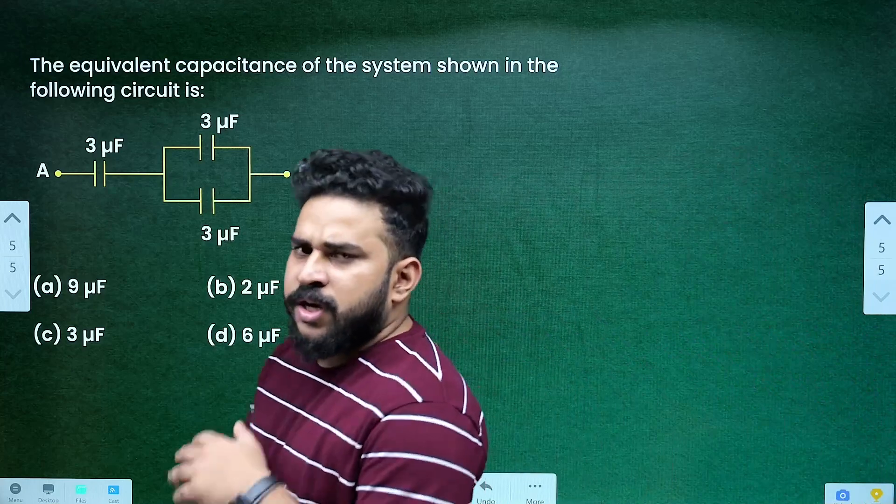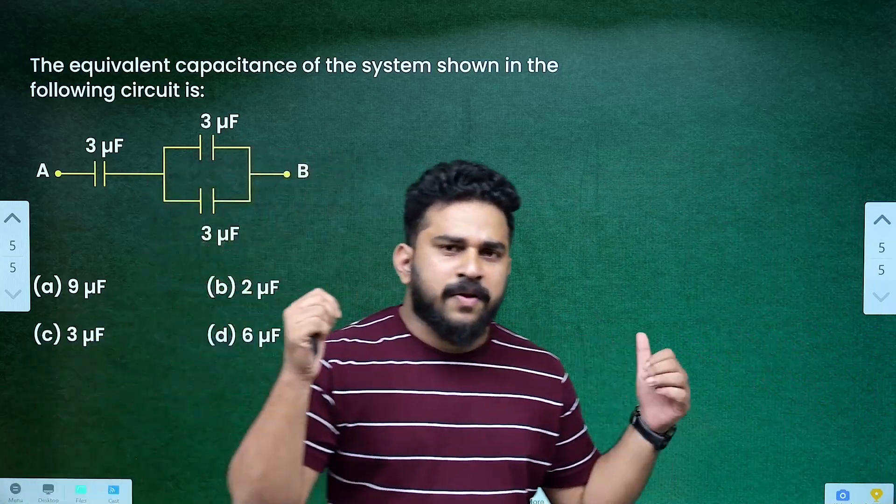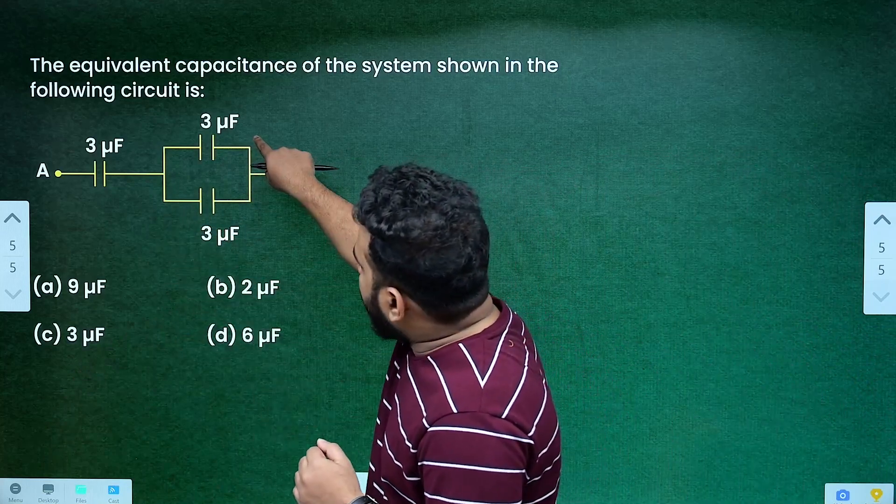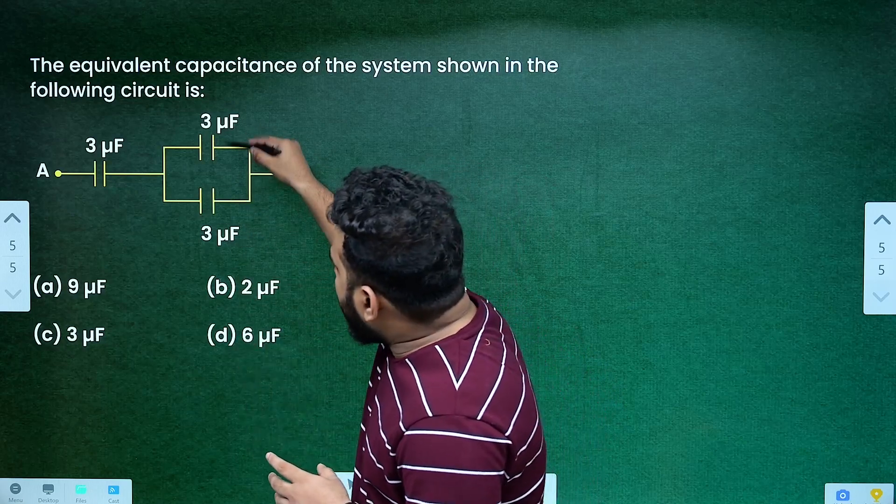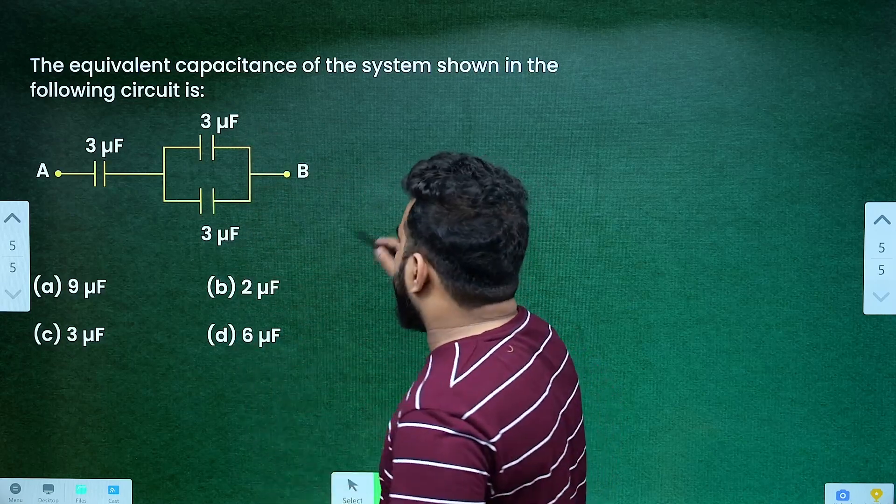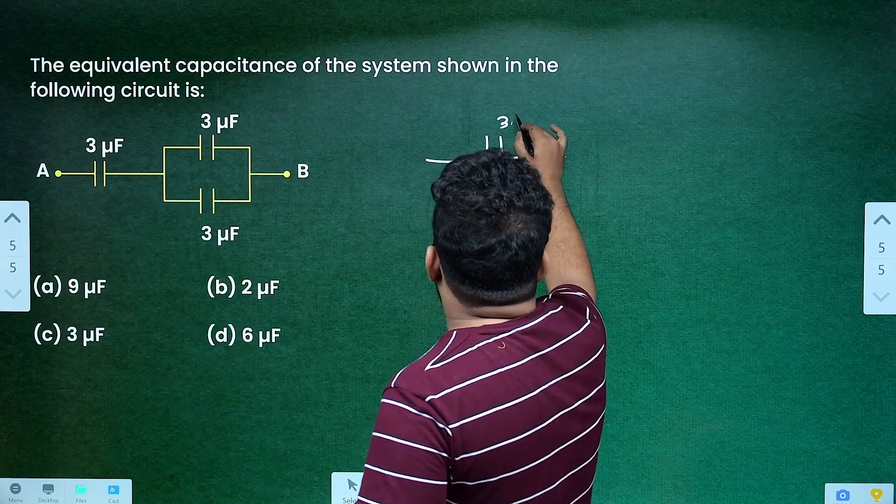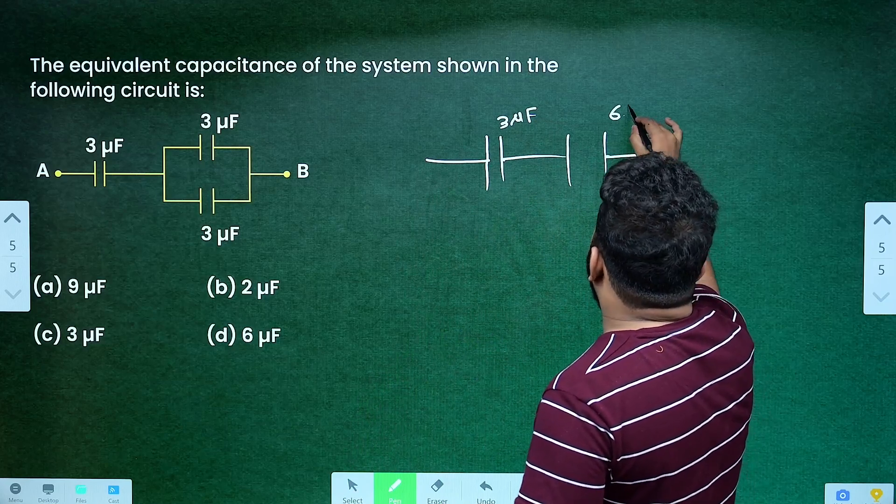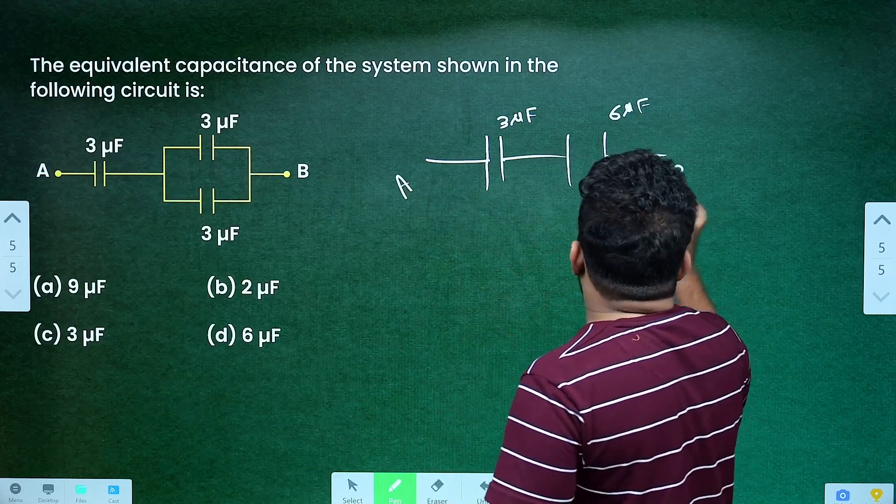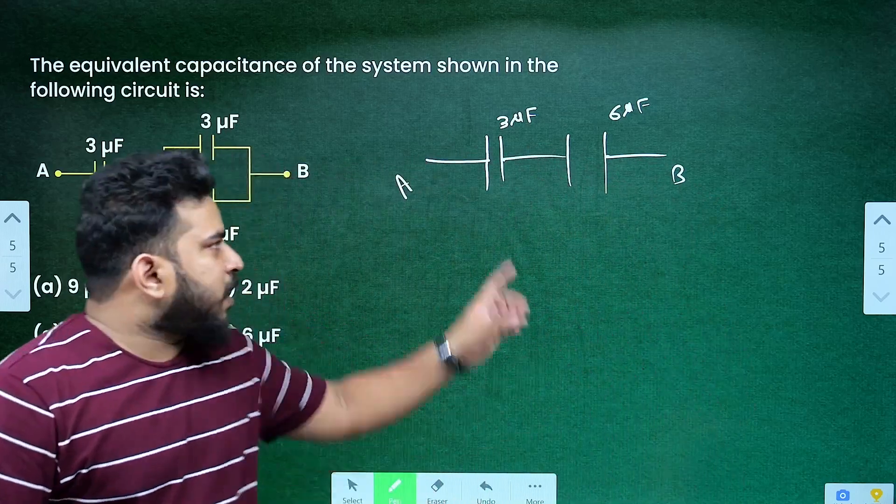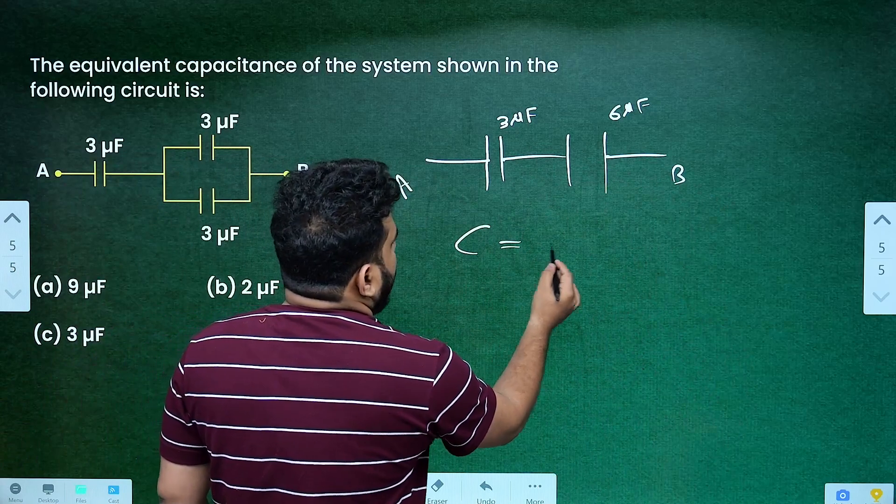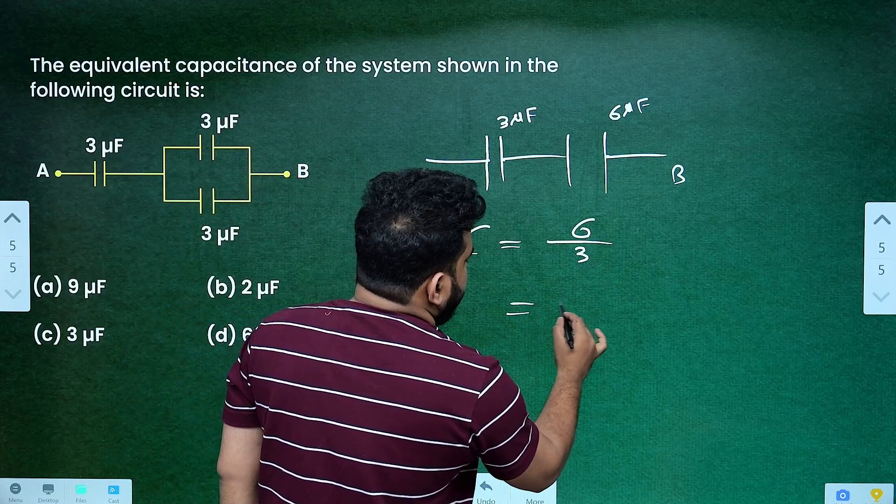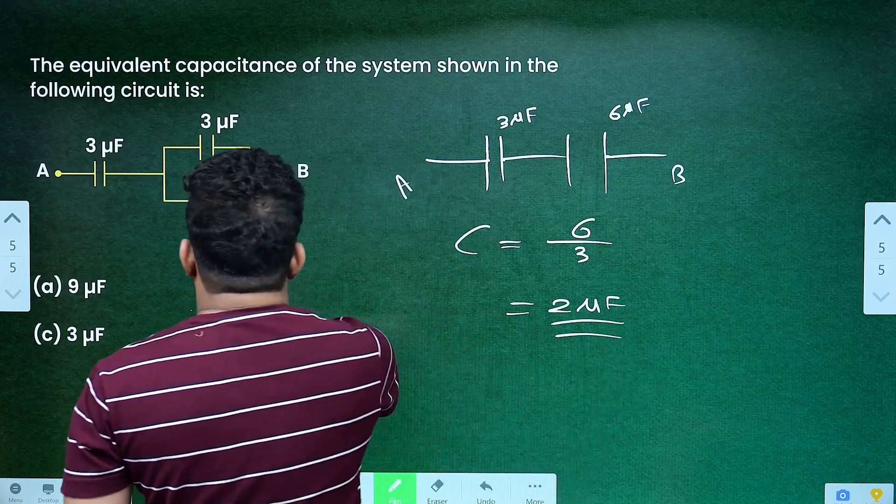Now for capacitance. 3 plus 3 microfarad gives 6 microfarad. So the effective capacitance between these two is C effective equals C1 divided by n plus 1. 6 divided by 3 equals 2 microfarad. The answer will be option B, 2 microfarad.